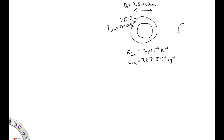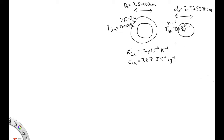Then we have a sphere of aluminum. This has an initial diameter, little d0, of 2.508 centimeters. It has some unknown mass. Its initial temperature is 100.0 degrees C. The thermal expansion coefficient of aluminum is given by 24 times 10 to the minus 6, and the heat capacity of aluminum is given by 900 joules per Kelvin per kilogram. And we are asked to find this mass.